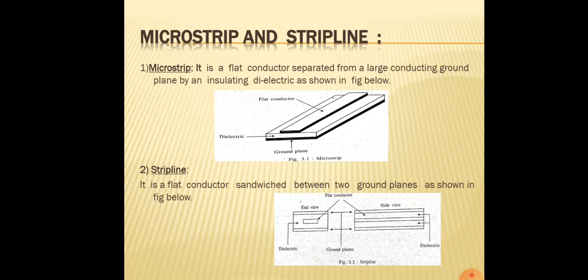The strip line is a flat conductor sandwiched between two ground planes. The wavelength of the strip line is usually one quarter wavelength (lambda by 4) or half wavelength (lambda by 2). Both strip line and microstrip are widely used to form tuned circuits used in microwave receivers.